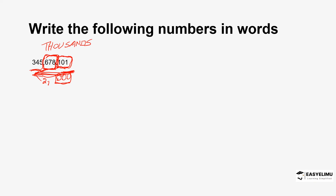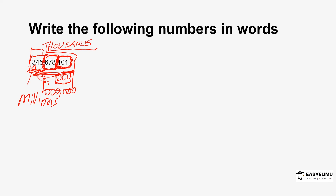Remember, we are assuming that all the remaining digits are zeros. Then the next group — if you reduce all of these to zeros, you can see there are six zeros — so this group here will be treated as millions. So you'll be talking of three hundred and forty-five million, six hundred and seventy-eight thousand, and then the last group is just read as one hundred and one.